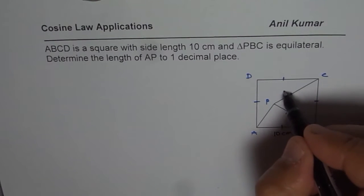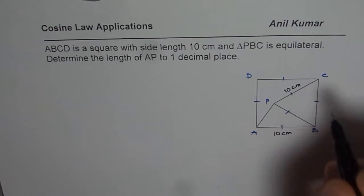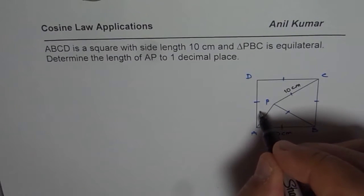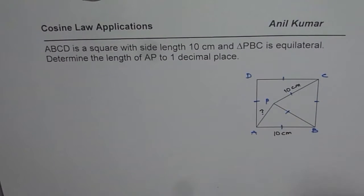Equilateral triangle means these sides are also 10 cm. So all these sides given to you are 10 cm. What you need to find is the length of AP. That means you need to find AP. So this is what you need to find. So you can pause the video, answer the question and then look into my suggestions.